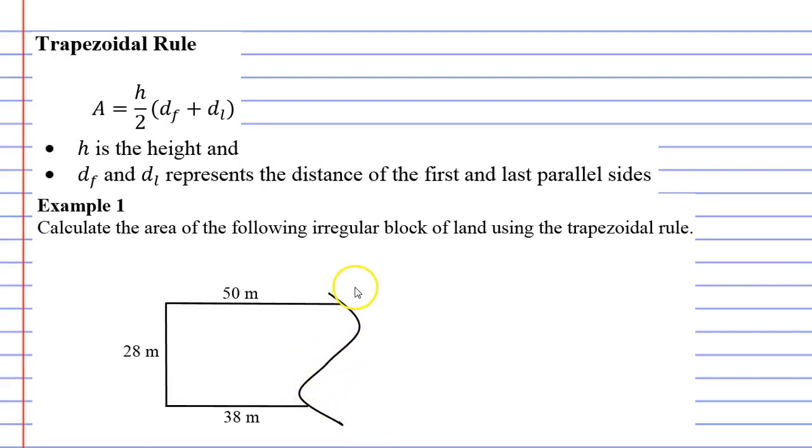Notice that we have to have three straight sides and one side that's irregular. You'll also notice that two of the sides are parallel, and this is quite important as well.